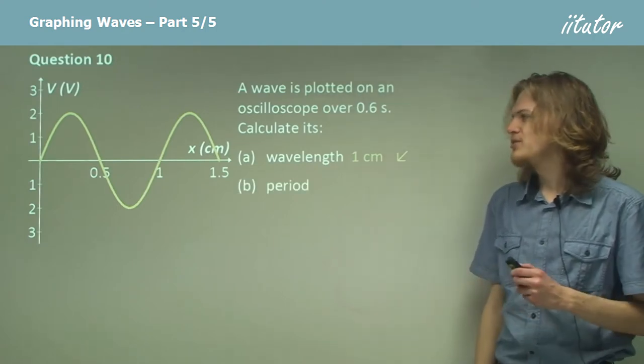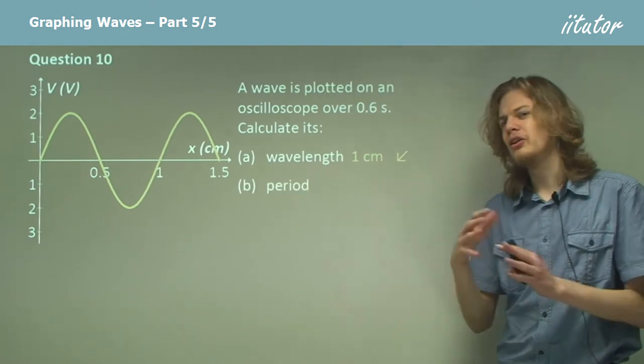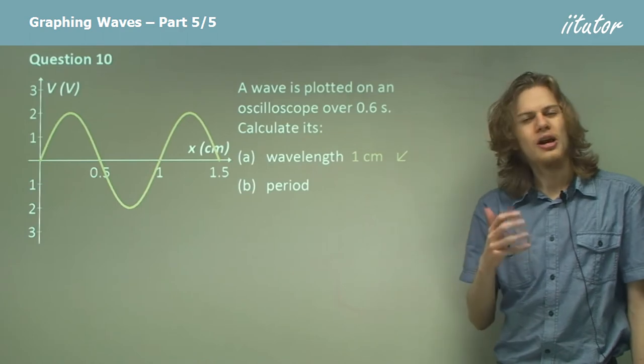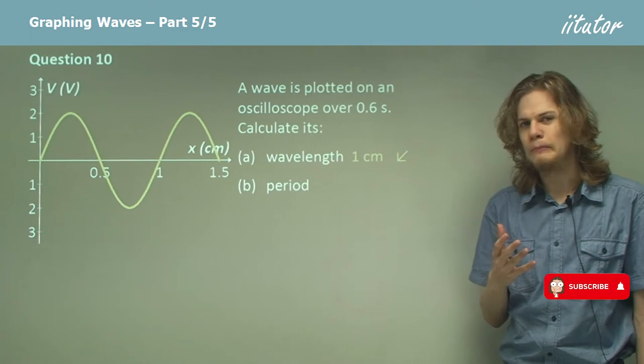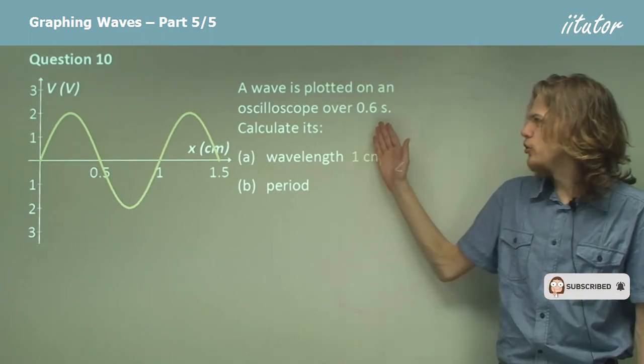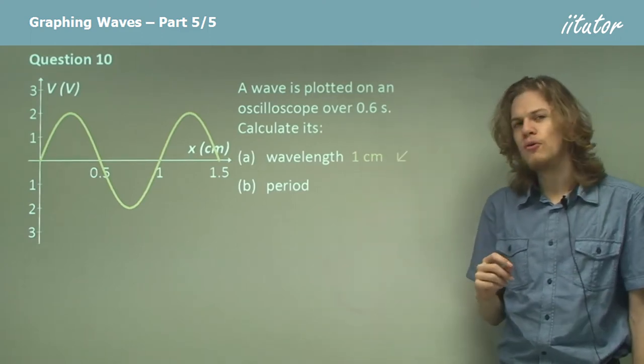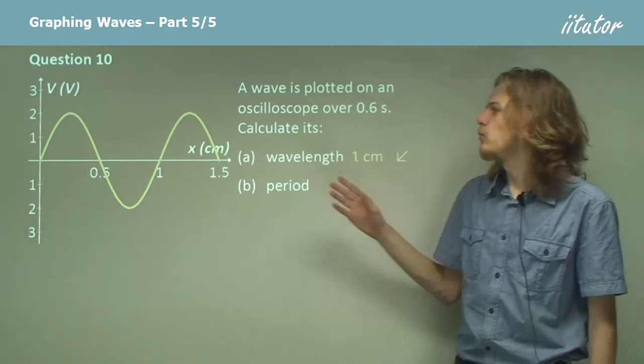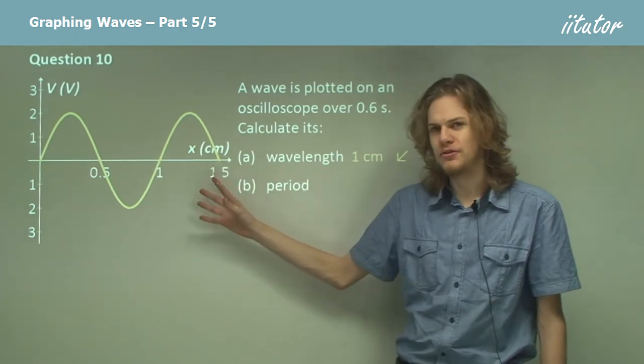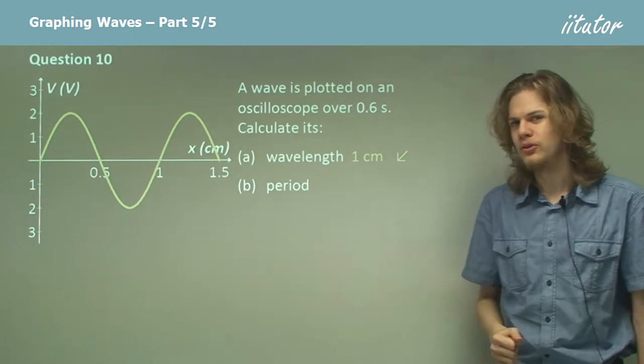Alright, calculate its period. This will be a little bit harder. So to calculate its period we have to know what's given to us in the part of the question here. So the wave is plotted over 0.6 seconds and in that time we get one and a half whole wavelengths. Got it?